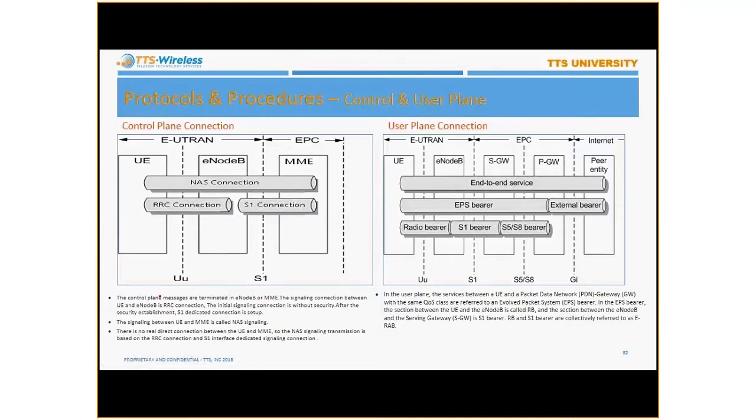So what's happening here? We have protocol and procedures. We have the control plane connection and then we have the user plane connection. Remember, the control plane is the signaling one and then the user plane is the traffic channel. So you see you have the RRC connection here, you have the S1 connection here, and then between UE and MME you have one NAS connection which we actually saw when we were looking in the MME.